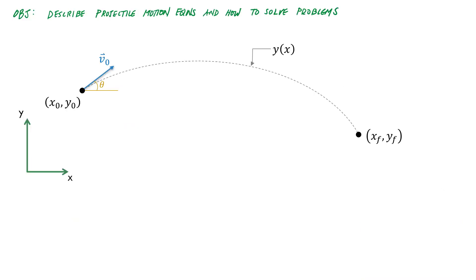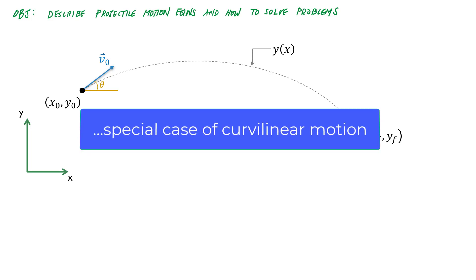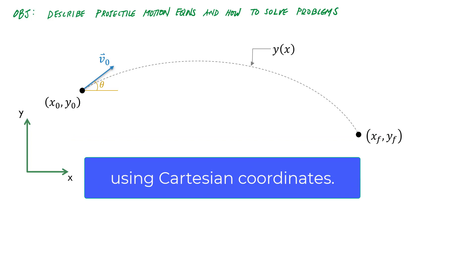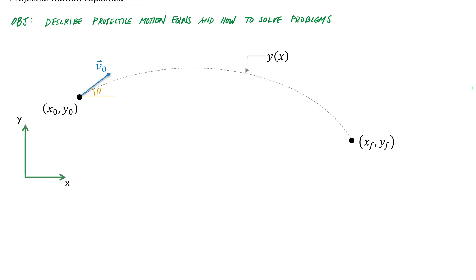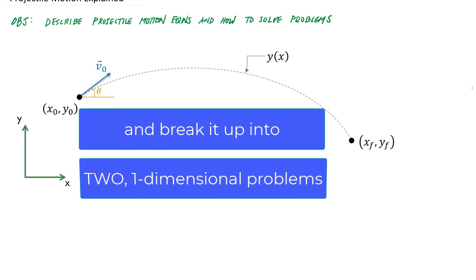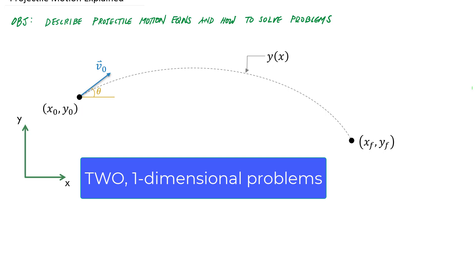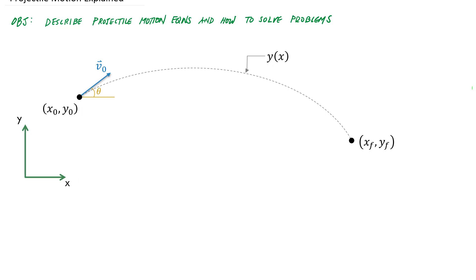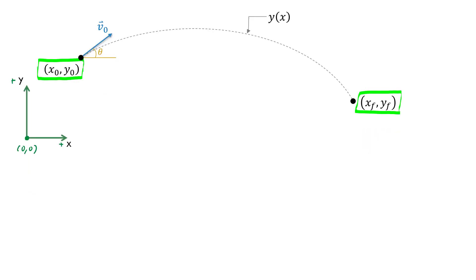Our projectile motion problem is really a special case of curvilinear motion using Cartesian coordinates. The power of Cartesian coordinates is that we take a two dimensional problem and break it up into two one dimensional problems. We do that first by establishing an origin, zero zero, and defining our positive X and positive Y directions. With this origin, we're able to define an initial position and a final position.